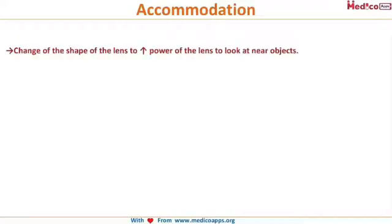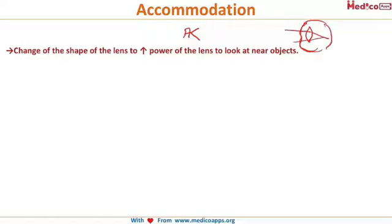Accommodation is the change in shape of the lens to increase its power to look at near objects. Light rays from a near object are divergent, and the convergent power of the lens alone is not enough to focus them on the retina. Hence, the lens increases its curvature so it can easily focus these rays on the retina — that is the story of accommodation.